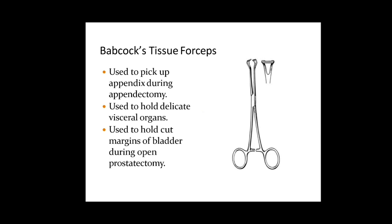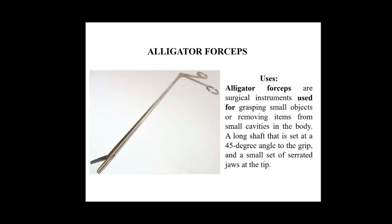This forceps has a blended tip used to hold delicate visceral organs — because if you use any sharp one, the delicate visceral layers can be damaged and rupture will take place. So this blunt-ended tip allows you to use it safely for soft tissues.